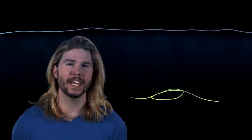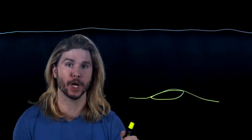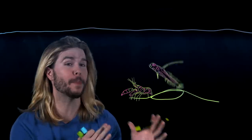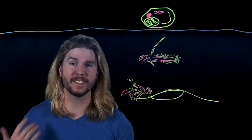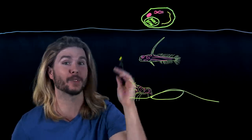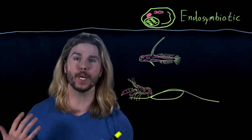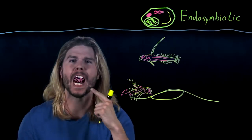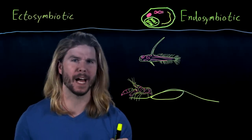Beyond how a symbiote lives is where it lives. If two organisms engaged in a relationship live independently of each other — like the pistol shrimp does with the goby fish that it builds a burrow for — then they simply are independent. These relationships do get more intimate, though. If a symbiote lives inside of the tissues or even the cells of its host, like chloroplasts do inside of plant cells which allow those cells to photosynthesize light, then it's an endosymbiotic relationship. And if a symbiote lives somewhere on the surface of the body of its host, like those terrible isopods that replace fish tongues, then it's an ectosymbiotic relationship.